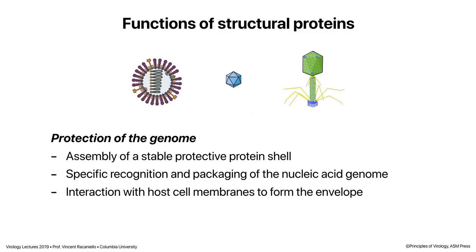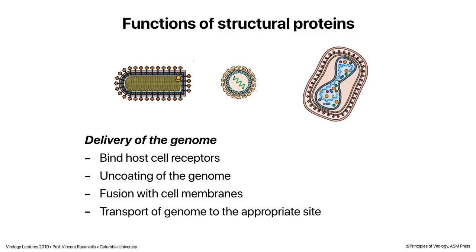Some viruses have envelopes or membranes. In the middle is a virus that looks like polio — just a protein shell — but some viruses have envelopes around them, and the viral proteins have to interact with the membrane to make an envelope. The proteins also have to deliver the genome. It's a very interesting paradox: these particles have to be very stable, yet they have to deliver the genome at some point. That is what we call metastability.